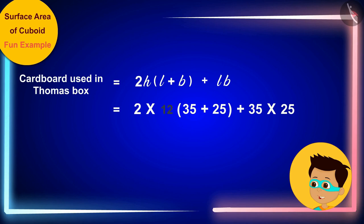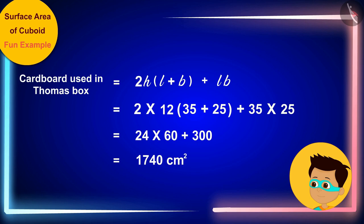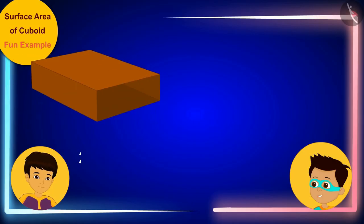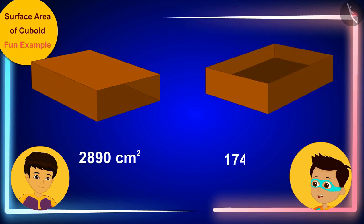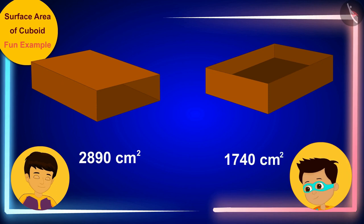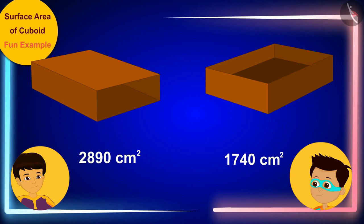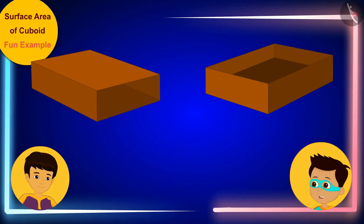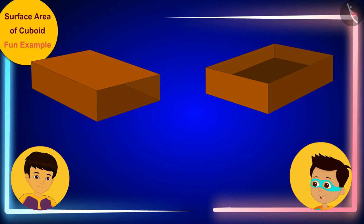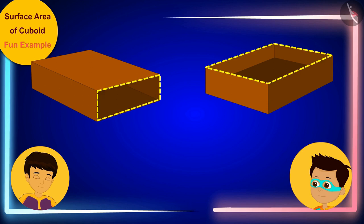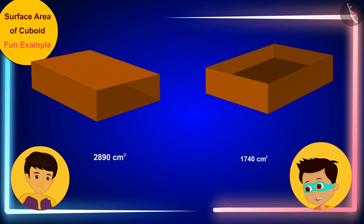Viewers are asked to pause the video and try on their own. Thomas then reveals the answer: 1740 square centimeters of cardboard has been used in his box, compared to 2890 square centimeters for Manas's box. Even though both boxes have exactly the same dimensions, the different opening sides result in different amounts of cardboard used.